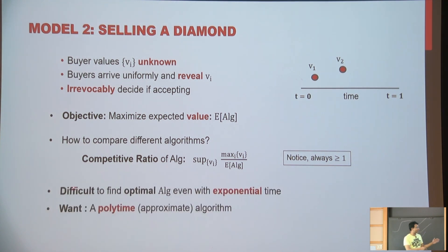And now the point I was making is that even if I give you exponential time, it's unclear how you're going to design this optimal algorithm. So in some sense, this is already a challenge. But ideally, we want even a polynomial time algorithm, which has competitive ratios as close to one as possible.